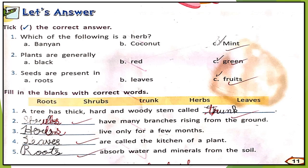Now fill in the blanks using the help box. Number one: a tree has a thick, hard, and woody stem called — it is called trunk (T-R-U-N-K). Number two: blanks have many branches rising from the ground — that is shrubs (S-H-R-U-B-S). Write S in capital because it starts the sentence.